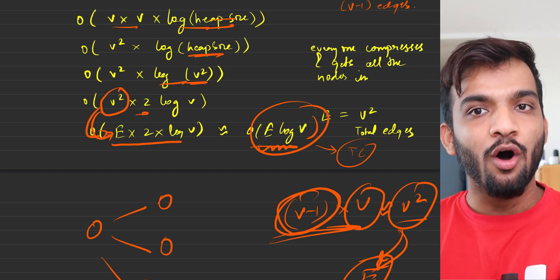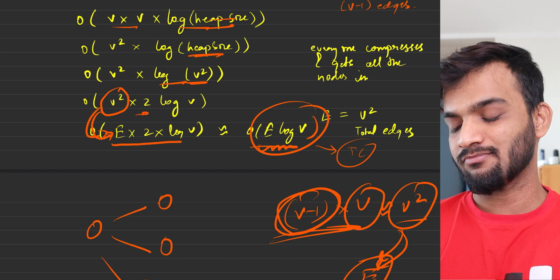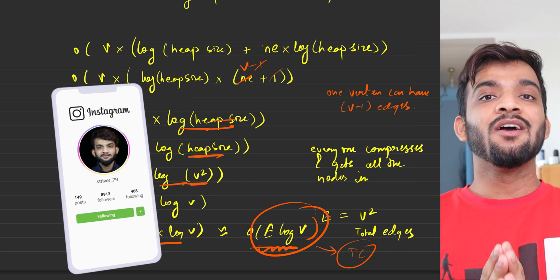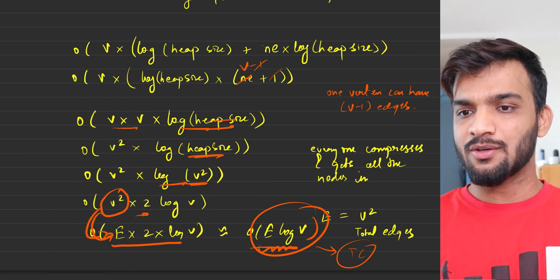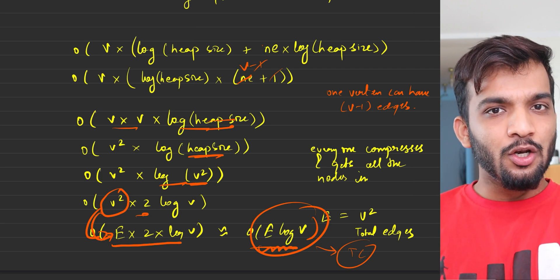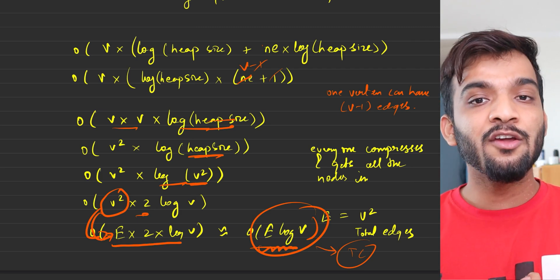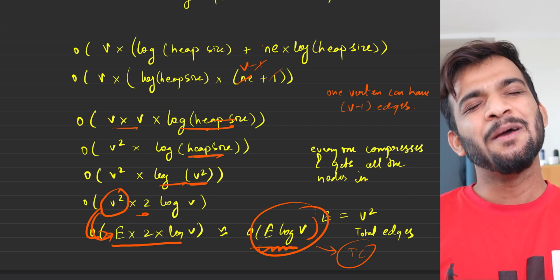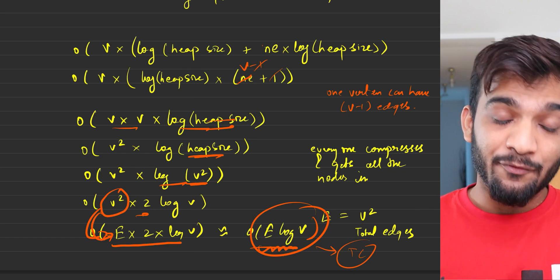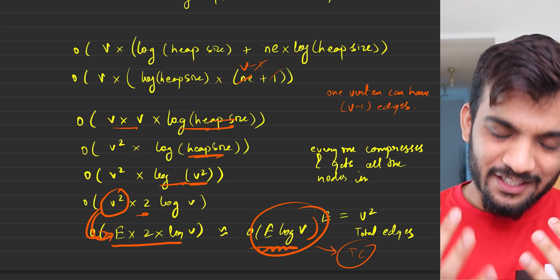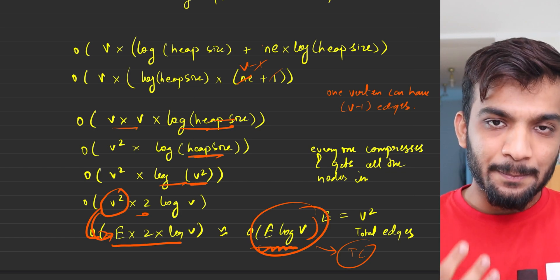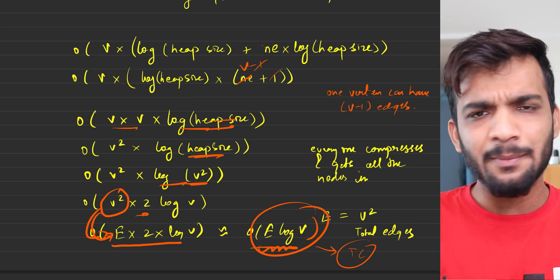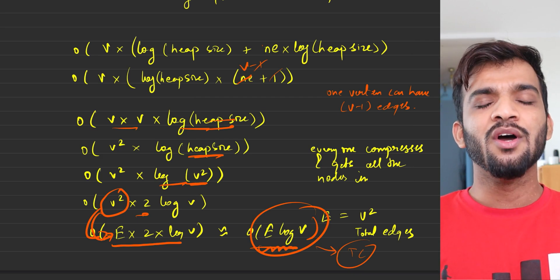I hope I was able to explain the time complexity of Dijkstra's algorithm. It took a lot of research because most resources just state E log V without deriving it or explaining it. If I was able to help, please hit the like button. If you're new to the channel, please consider subscribing. Also check out the DP series and the DSA sheet — links are in the description. With this I'll wrap up — see you in the next video, bye bye, take care.